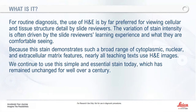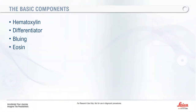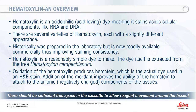We have four basic components: our hematoxylin, our differentiator which adjusts the coloration of your hematoxylin, bluing which changes the hematin from a reddish color to the blue color we're used to, and of course eosin, which is our cytoplasmic stain. Hematoxylin is an acidophilic dye — it's acid loving — so it's going to stain anything in your nucleus, including your DNA and RNA.